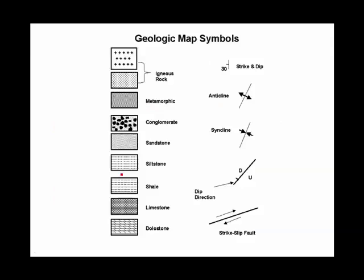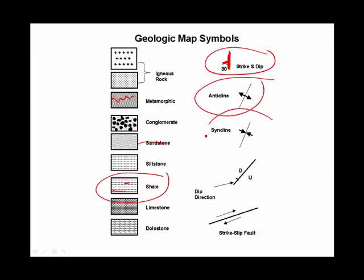These are the geologic map symbols that we tend to use. If you've got color, different rock layers are given different colors. But if color is not available, there are standard patterns — shale has little lines in it, sandstone looks like sand, conglomerate looks like conglomerate, and metamorphic is all wavy. The key symbol is strike and dip: the strike is the long part of the T, which is a compass direction shown on the map, while the short part of the T shows which way it's dipping, with a number for the angle of dip. We also have symbols for anticlines and synclines, as well as for various kinds of faults.